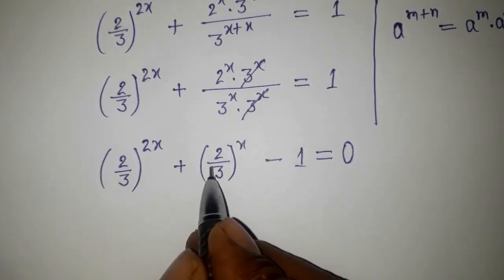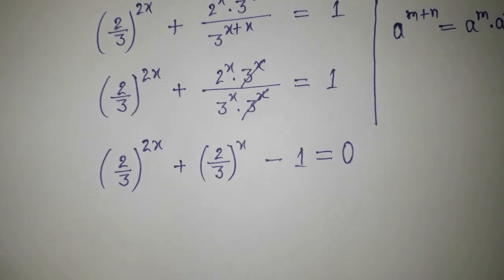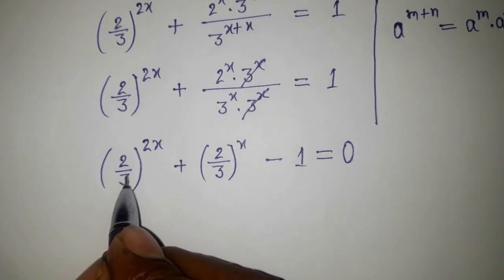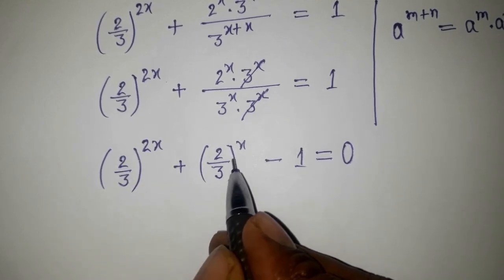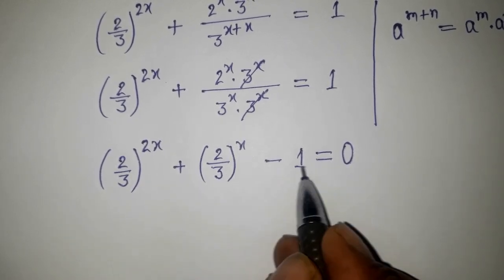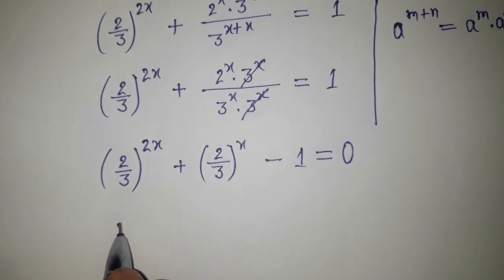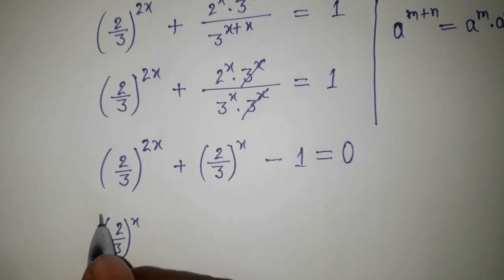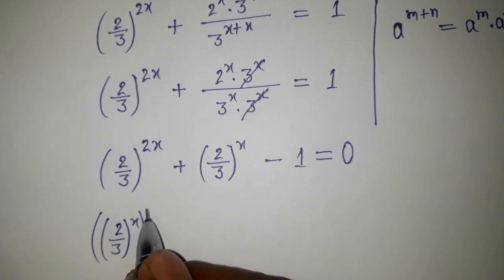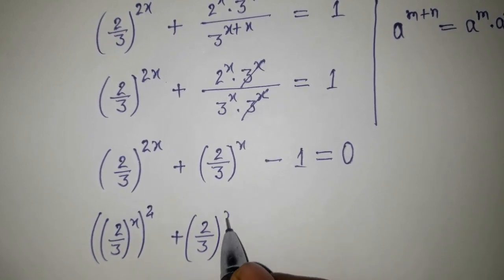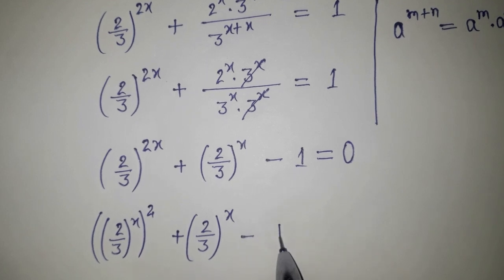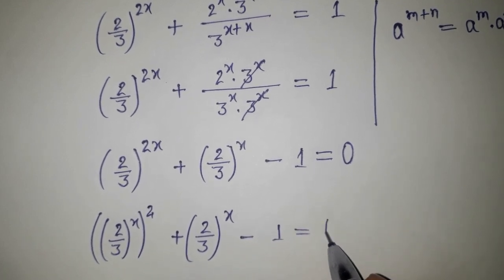This is looking like a quadratic equation. We have (2/3) to the power x squared and (2/3) to the power x, and minus 1. So this can be written as (2/3)^(2x) plus (2/3)^x minus 1 equals 0.